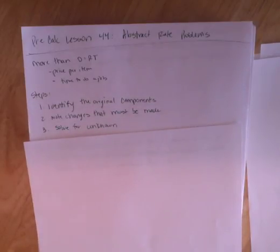Now here are the steps that you should already be doing, but just as a reminder. First, identify the original components, all of them, the distance, the rate, the time, or whatever that ends up being. Two, note changes that may be made. So if we're changing the time or we're changing the amount of workers or something like that, note the changes. Then three, we're going to solve for the unknown component.